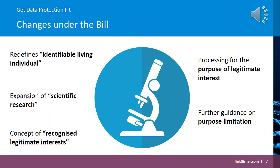Let's look at some of the changes proposed under the bill. The identifiable living individual, currently the identifiable natural person under GDPR, is redefined — a nuanced change that could lead to some data not falling under UK data protection law. Two cases are given: firstly, when the living individual is identifiable by the controller or processor by reasonable means at the time of processing; and secondly, where the controller or processor knows, or ought reasonably to know, that another person who will obtain the data through processing will be able to identify the living individual by reasonable means.